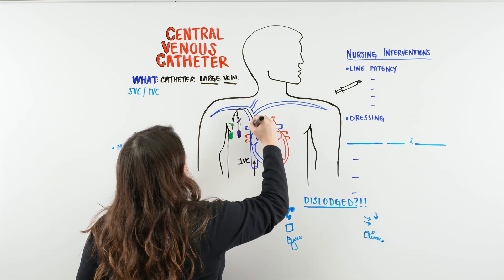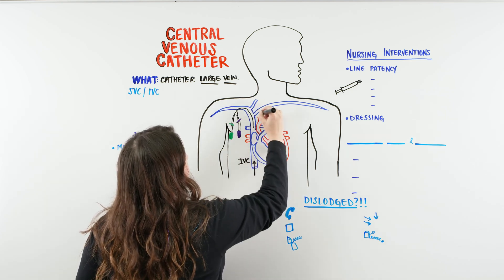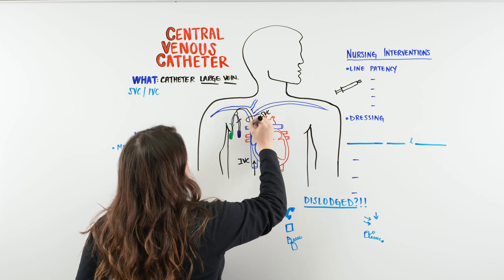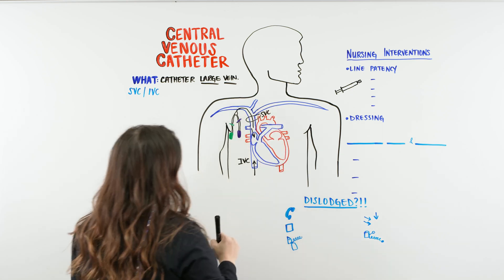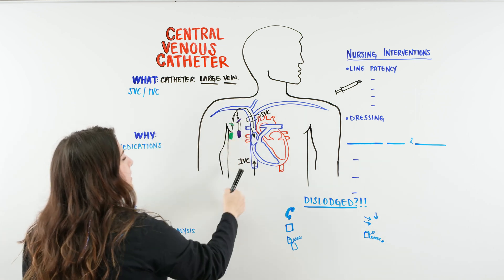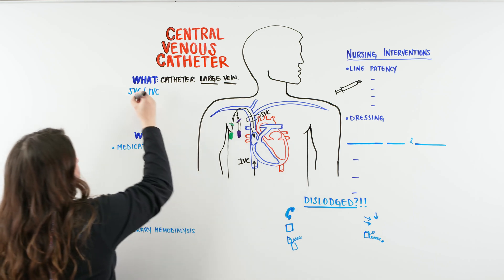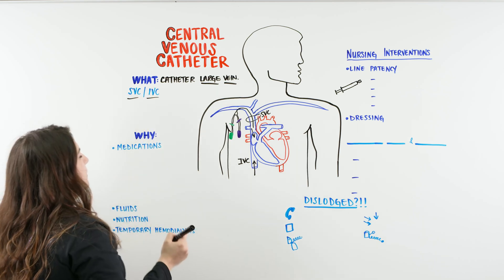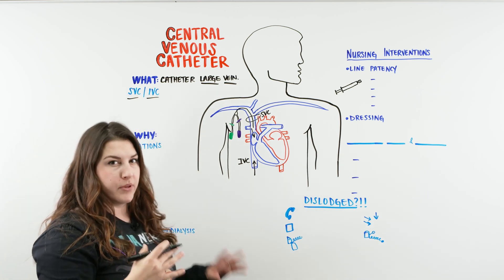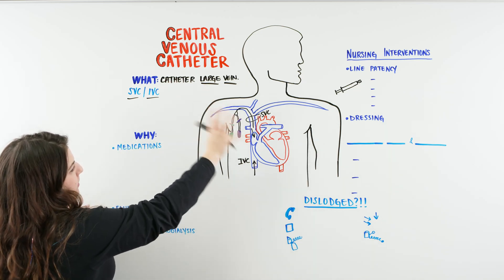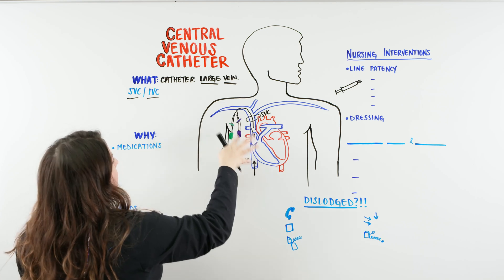And then from here we have our superior vena cava, right? That's returning blood back to our heart. So our superior vena cava and our inferior vena cava, the biggest vein that's returning blood back to our heart. And this is where we're going to place our central venous catheter or this catheter that is placed in the biggest veins that are closest to our heart.